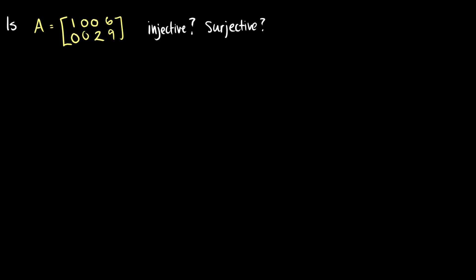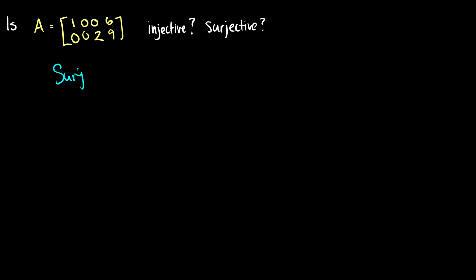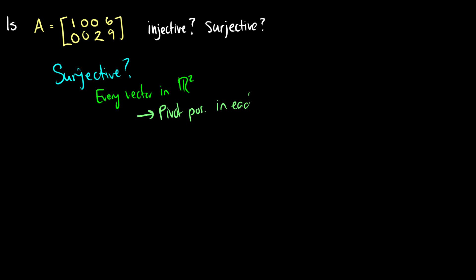So if I give you a matrix, I can ask you: is the matrix injective or surjective? We know that T(x) equals A times x for some matrix, so we'll deal with the matrix itself. Is it surjective? This is an M by N matrix, so we need to get every vector in Rᵐ. A good way to check: is there a pivot position in each row? The answer is yes — there's one here and one here — so it is surjective.